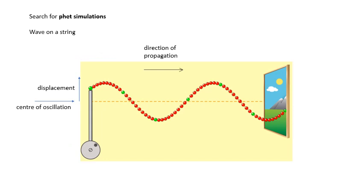There's some excellent stuff on the internet — these PhET University of Colorado simulations. This is a screenshot from a wave on a string. It shows this progressive wave, a transverse wave on a string, and there's an oscillator that moves the string up and down. The center of oscillation is where the string would be if the wave wasn't there. So we are displacing the end of the string — displacement from the center of oscillation. This wave is traveling from left to right; that is the direction of propagation, the direction the wave is traveling in.